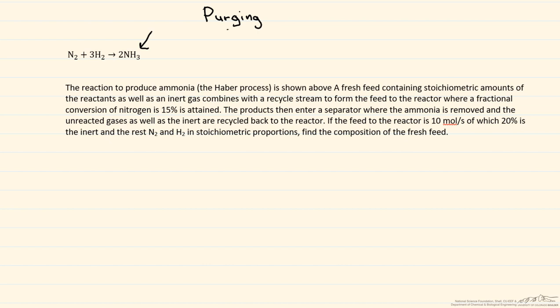Then the products enter a separator, so we have two different units. The ammonia is removed, the unreacted gases as well as the inert form the recycle stream. We have the feed to the reactor, and we need to find the composition of the fresh feed.